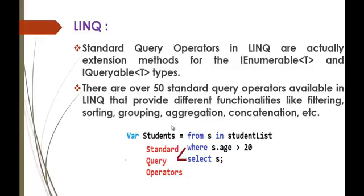Let us understand a very simple example. Here you can observe we have a query where 'students' is the variable. You can observe some keywords highlighted in blue color — things like 'from', 'in', 'where', and 'select'. These are called the Standard Query Operators.